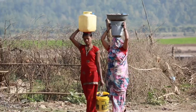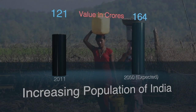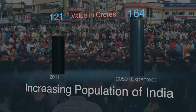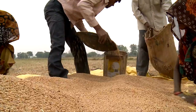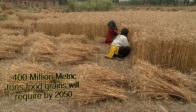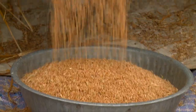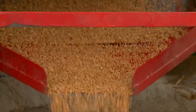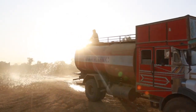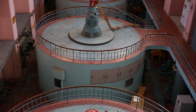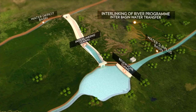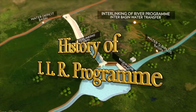Further, excessive extraction of groundwater is resulting in drastic depletion of water levels in some areas. With our population projected to reach about 164 crore by 2050, the requirement of food grains will be around 400 million metric tons, requiring enhanced irrigation. Water is also needed for domestic demands, infrastructure, industry, and power — precisely why interlinking of rivers is an idea whose time has come.